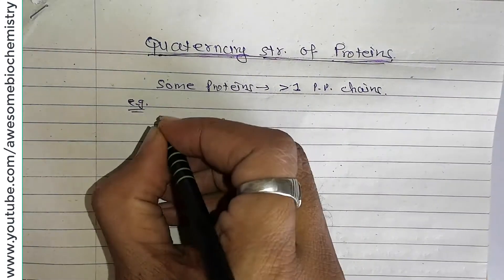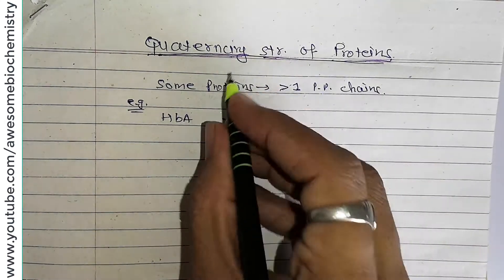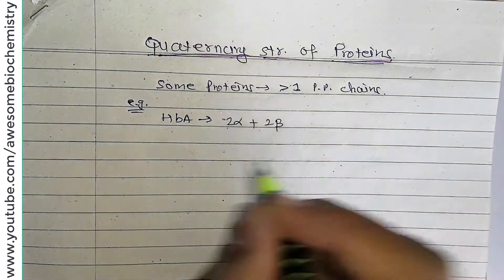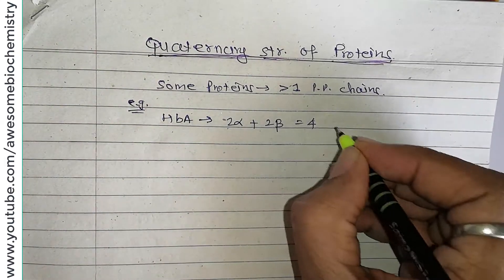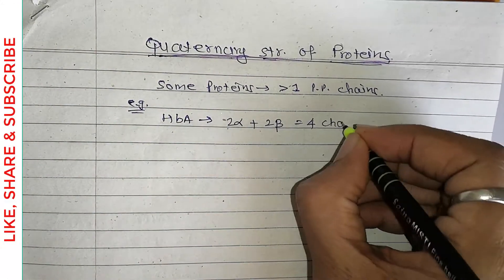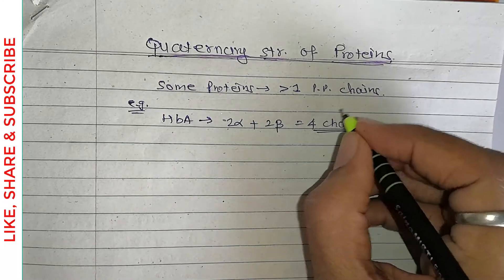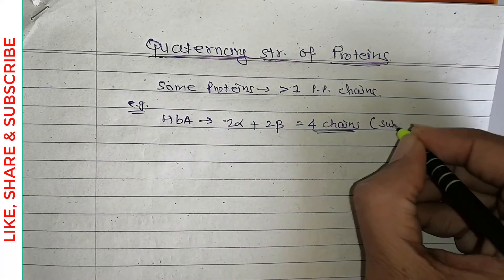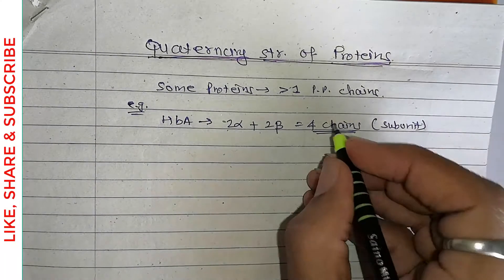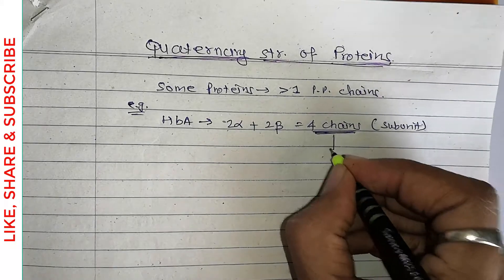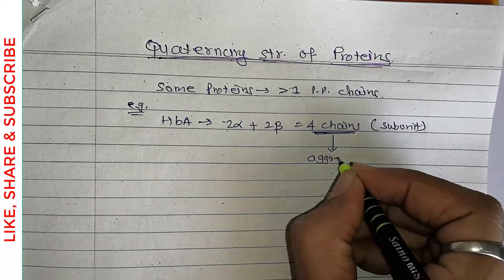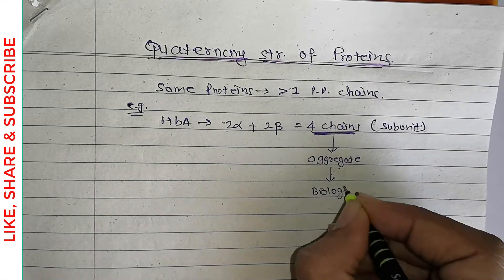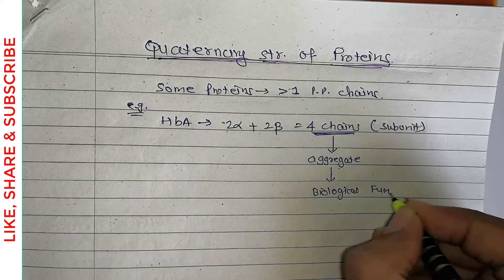Let us take the example of hemoglobin A, that is adult hemoglobin. In adult hemoglobin, there are two alpha chains and two beta chains, so four chains total. When more than one polypeptide chain is present, each chain is known as a subunit. In hemoglobin, all four chains aggregate together and carry out their biological function, which is the transport of oxygen.